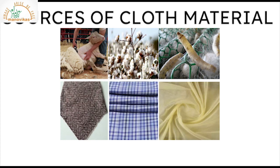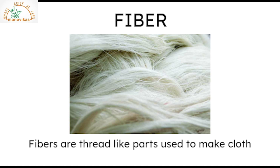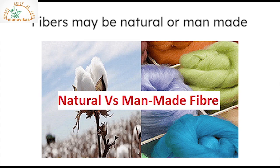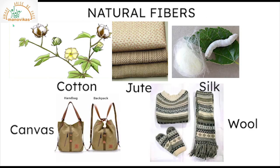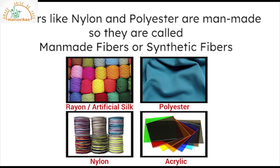Now let's look at our sources of cloth material. Fibers are thread-like parts used to make cloth. Fibers may be natural or man-made. Cotton, jute, silk, canvas and wool are natural fibers. These fibers are obtained from plants and animals.